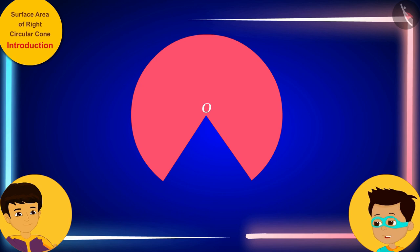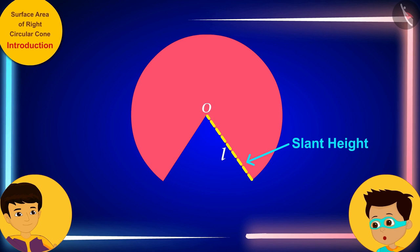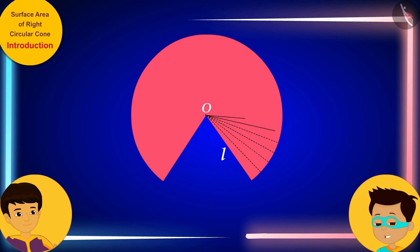Look, Manas, the side where we cut the cone will be its slant height, which we will express with L. Now, if we divide the paper into hundreds of small pieces by lines going from O,